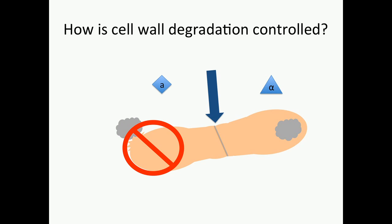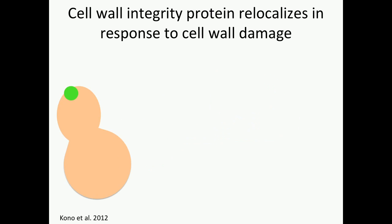My question is: how is cell wall degradation controlled? In general, cells will upregulate processes to repair damage in a site that was not supposed to degrade, but within the zone of cell fusion, the cell wall needs to degrade to allow for plasma membrane fusion and the formation of a diploid zygote. Work from the Pellman lab showed that a protein within the cell wall integrity pathway — a pathway known to respond to cell damage — quickly relocalizes from the bud tip to a site of cell wall damage when they laser ablate the cell wall.